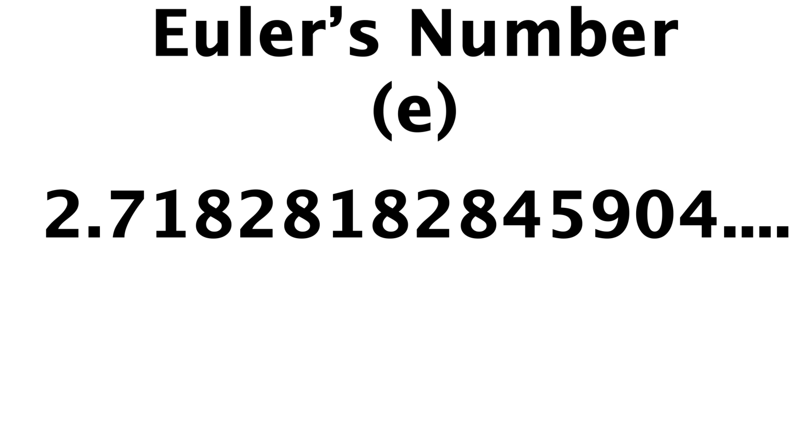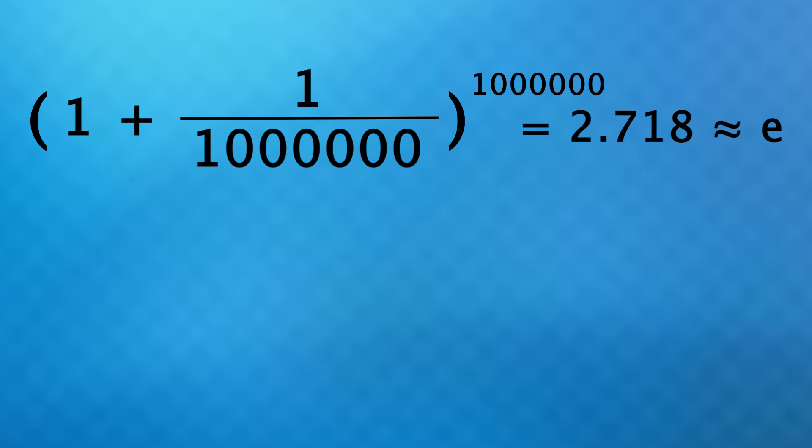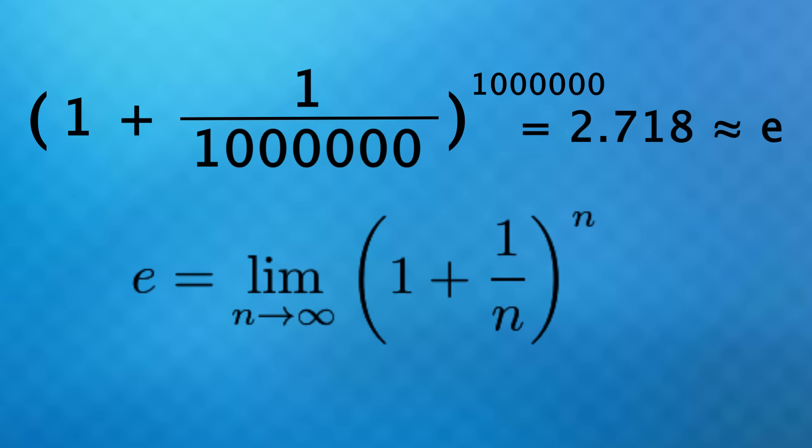I remember when I learned this in high school I thought, when would that even show up in the real world? But now I realize the better question is, when doesn't it show up? Mathematically, E is what you get when you calculate 1 plus 1 over a really big number, raised to that same really big number. As that number gets bigger and bigger, you get Euler's number.